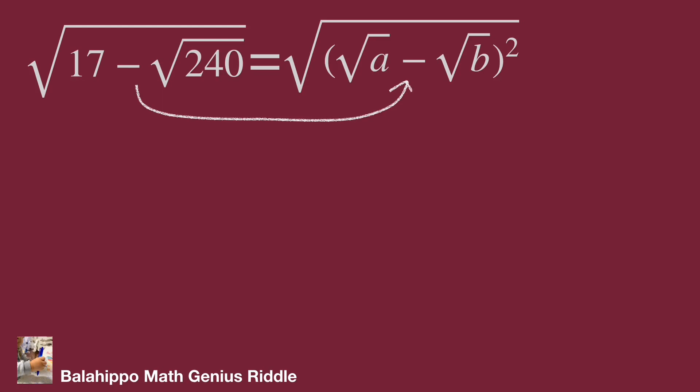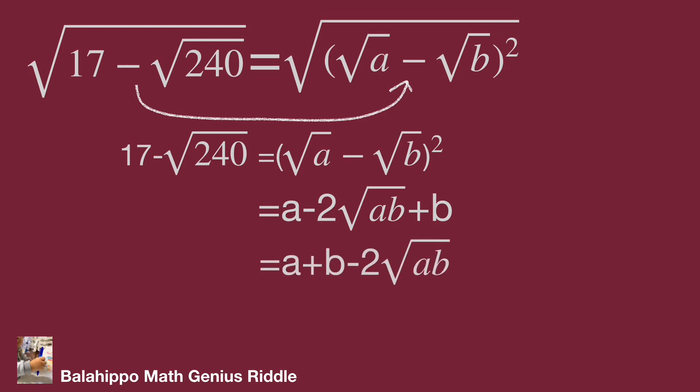Square both sides. The new equation becomes 17 minus square root of 240 equals bracket square root a minus square root b bracket squared. This equals a minus 2 square root of ab plus b. Adjust to equal a plus b minus 2 square root of ab.